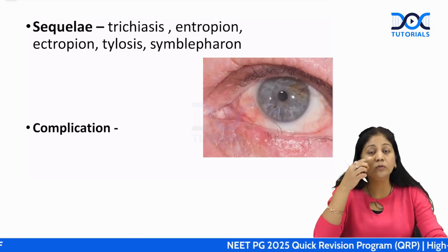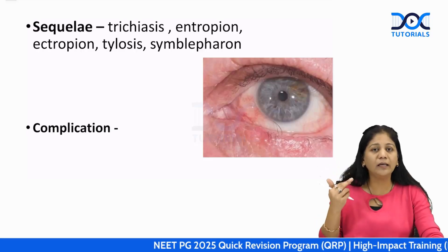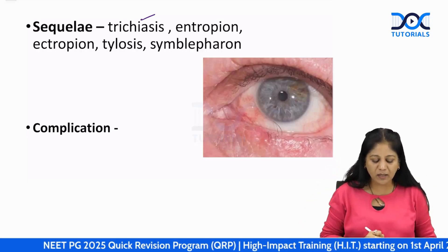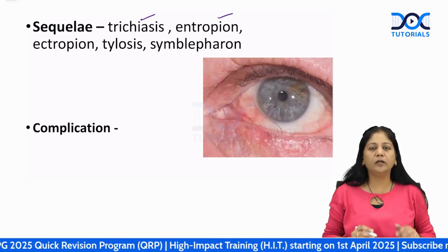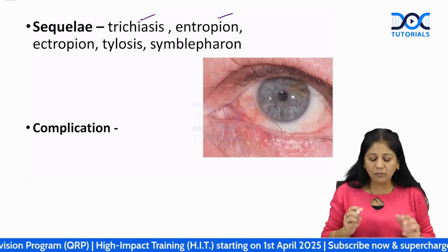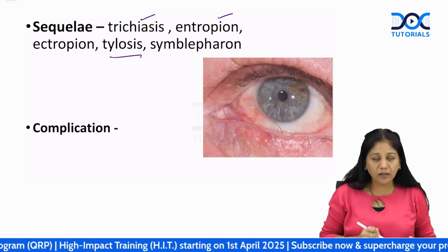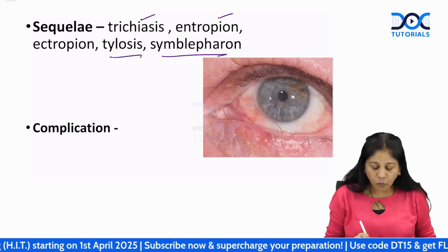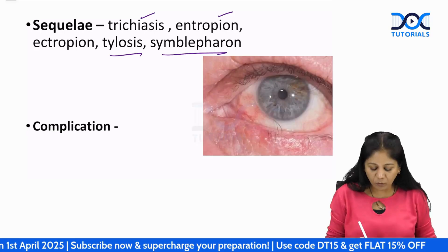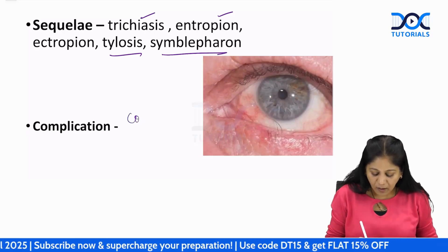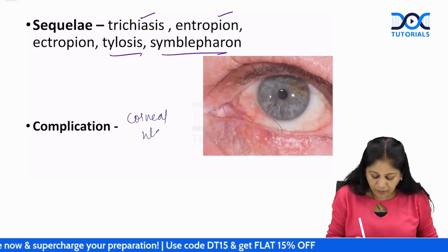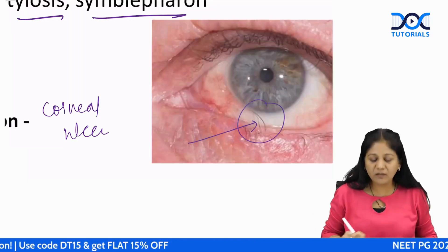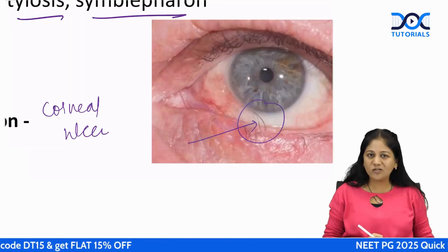Later, the scarring spreads to the lid, lid margin, and eyelash. You may see trichiasis, entropion, and thickening of the lid margin called tylosis. You can also have adhesion — symblepharon. The only complication in trachoma is development of a corneal ulcer, which could have been avoided by treating the trichiasis earlier.